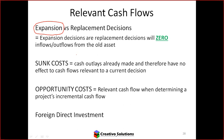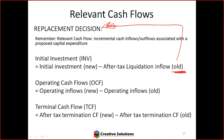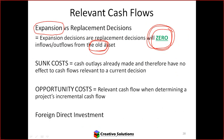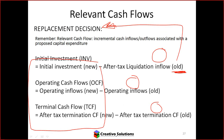Expansion is buying more of something purely for the purpose of buying more. Replacement is buying something to replace something else. With expansion decisions, the old asset will always be zero — so with expansion, all you look at is the new. Expansion decisions are easier to calculate than replacement decisions because replacement requires analyzing all of the cash flow calculations for both old and new.